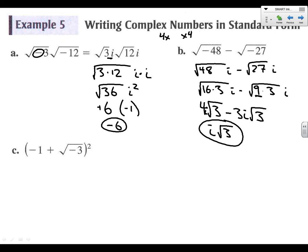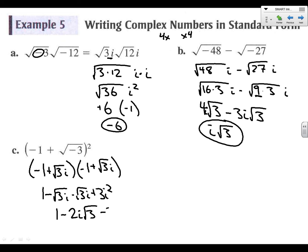All right, last one we'll look at here. We're going to FOIL. Negative 1 plus root 3i times itself. So we'll have negative 1 times negative 1 is 1 minus root 3i minus root 3i. And then at the end we'll have plus 3i squared. Let's go ahead and clean this up. We'll have 1 minus 2i root 3 minus 3. And so this is negative 2 minus 2i root 3. Or we can pull out that negative 2 and say 1 plus i root 3 or root 3i.